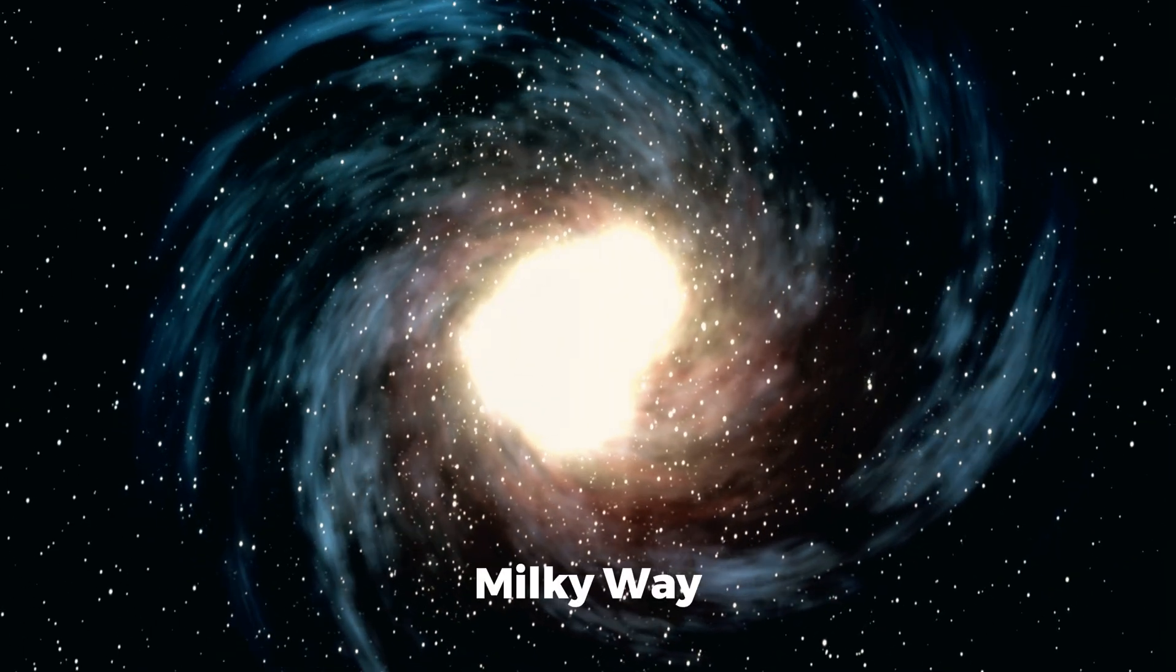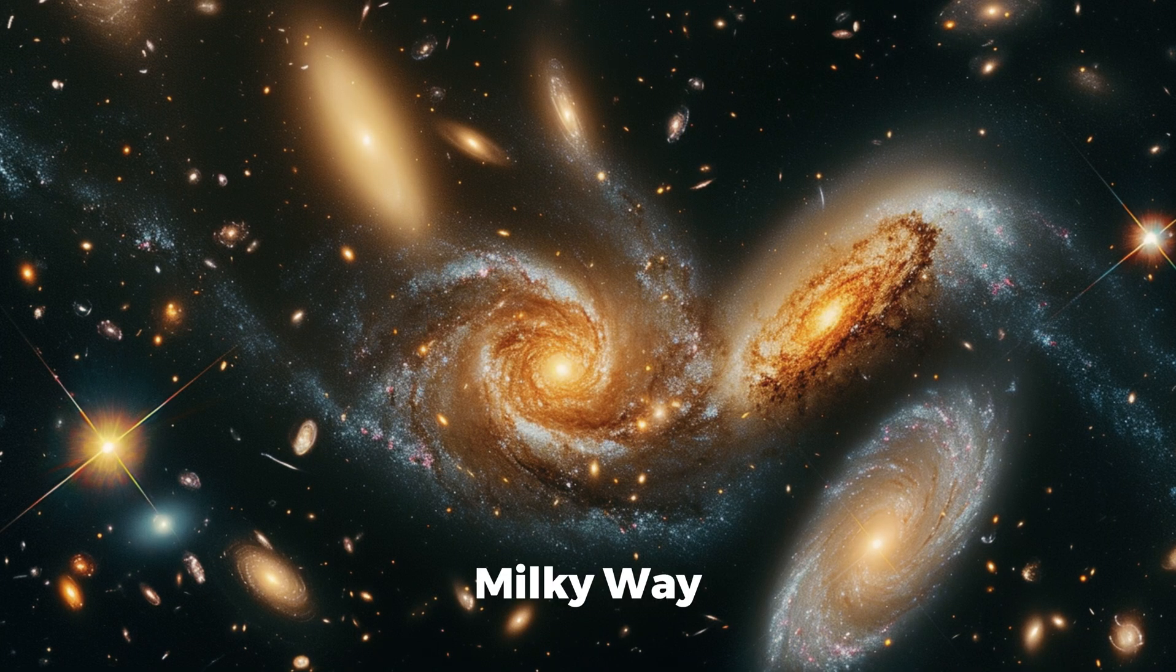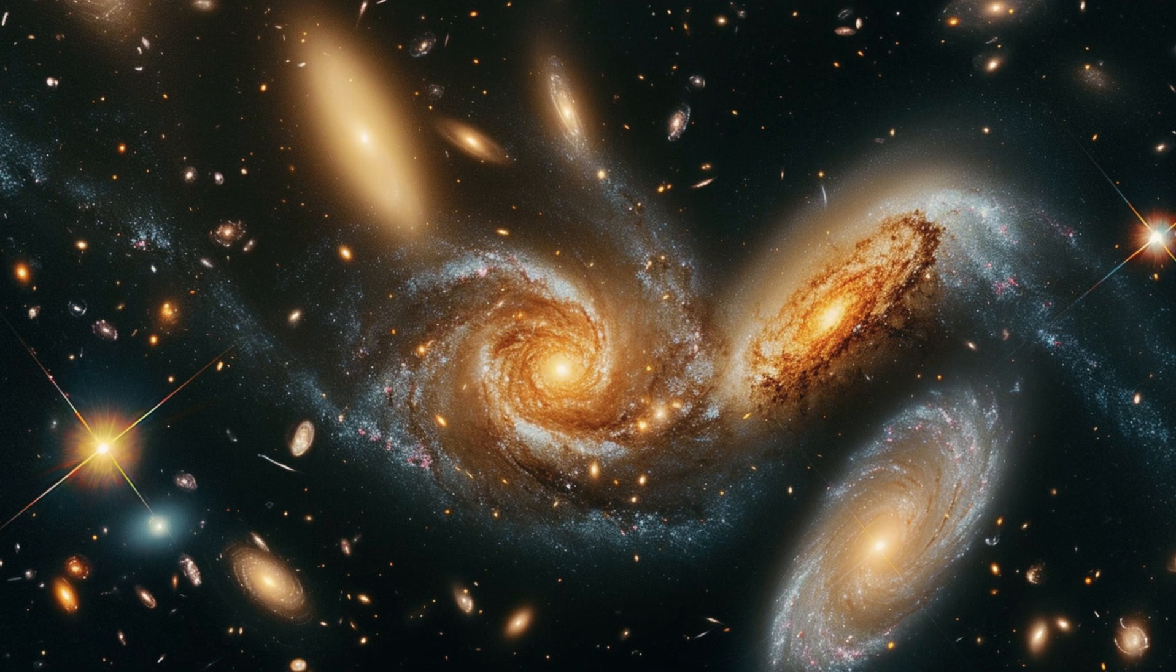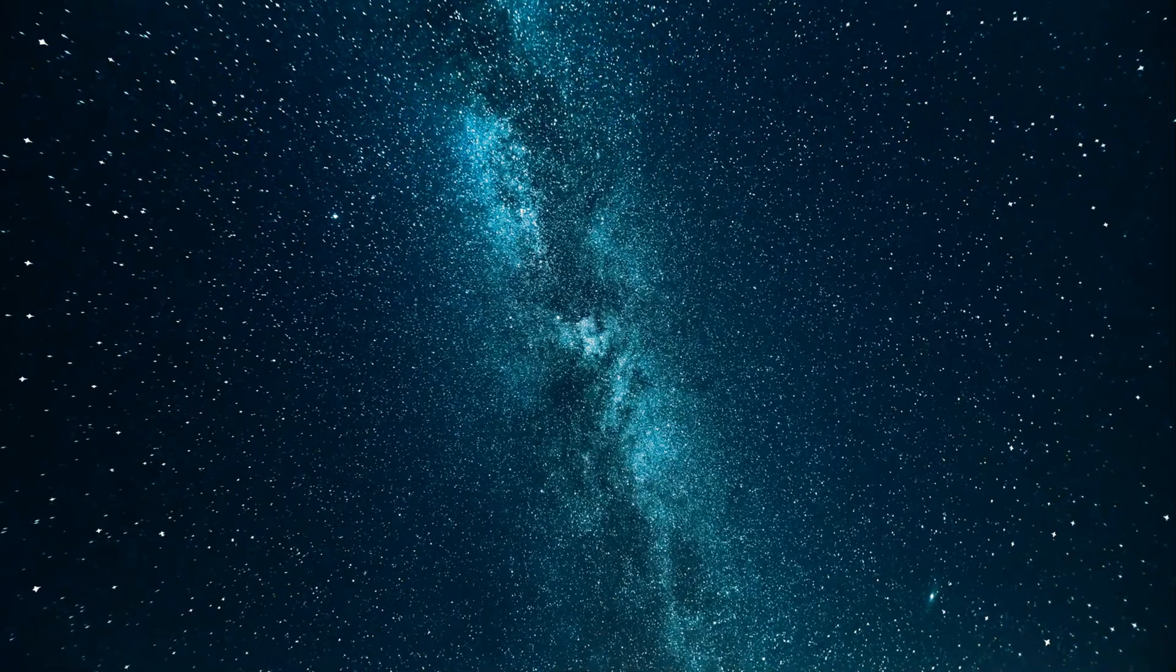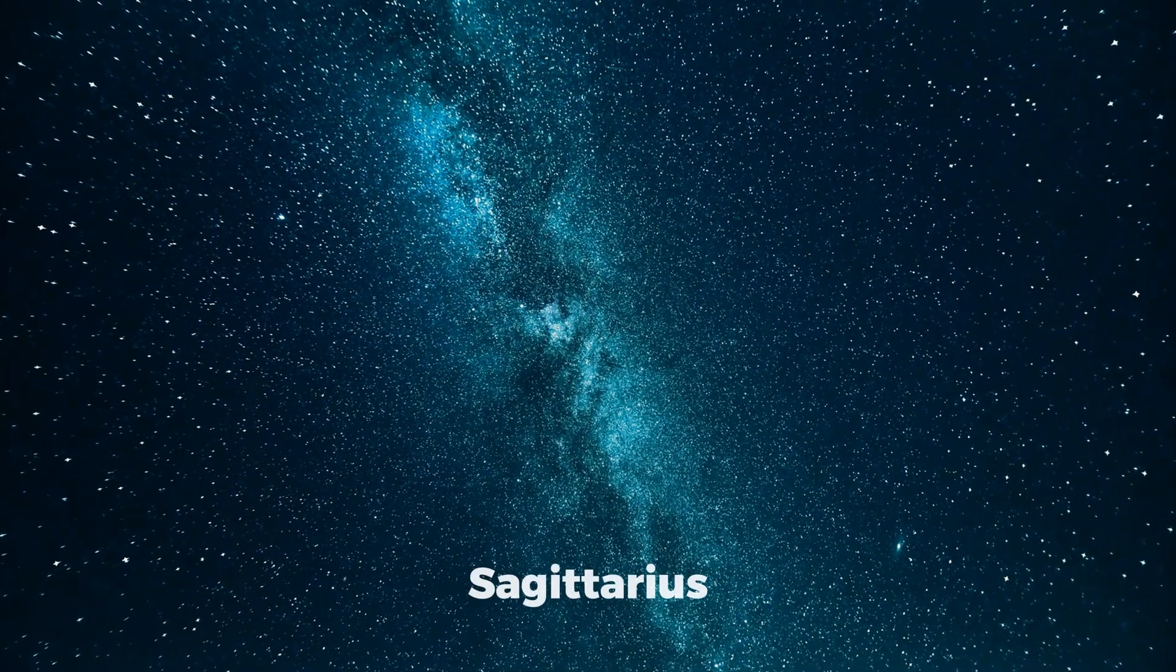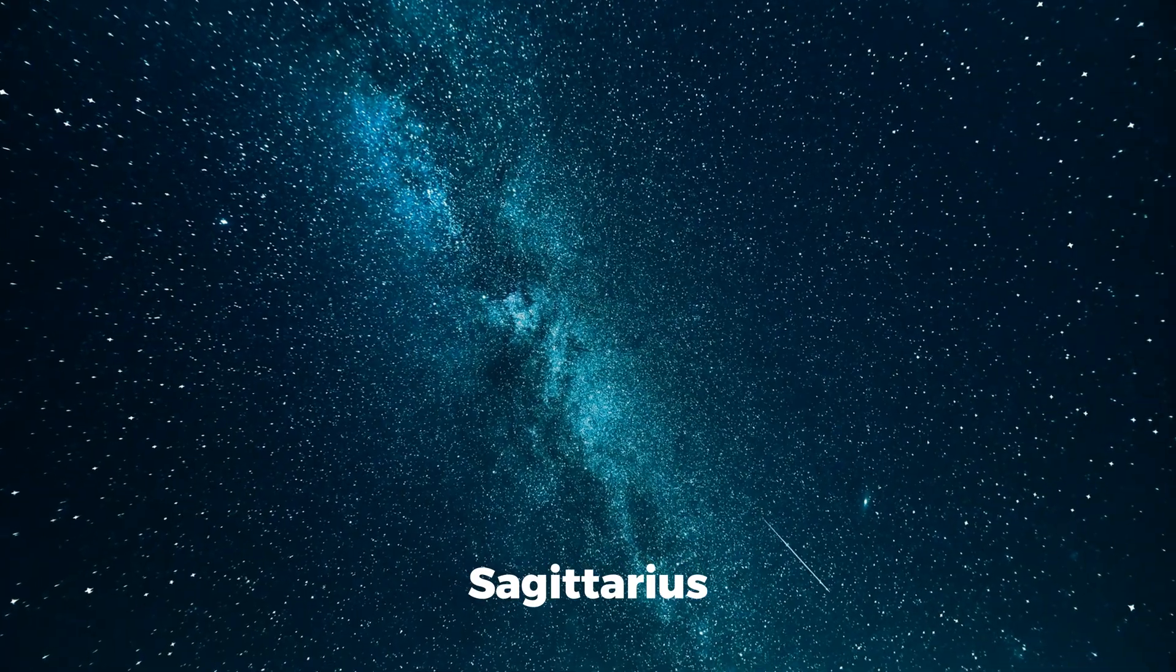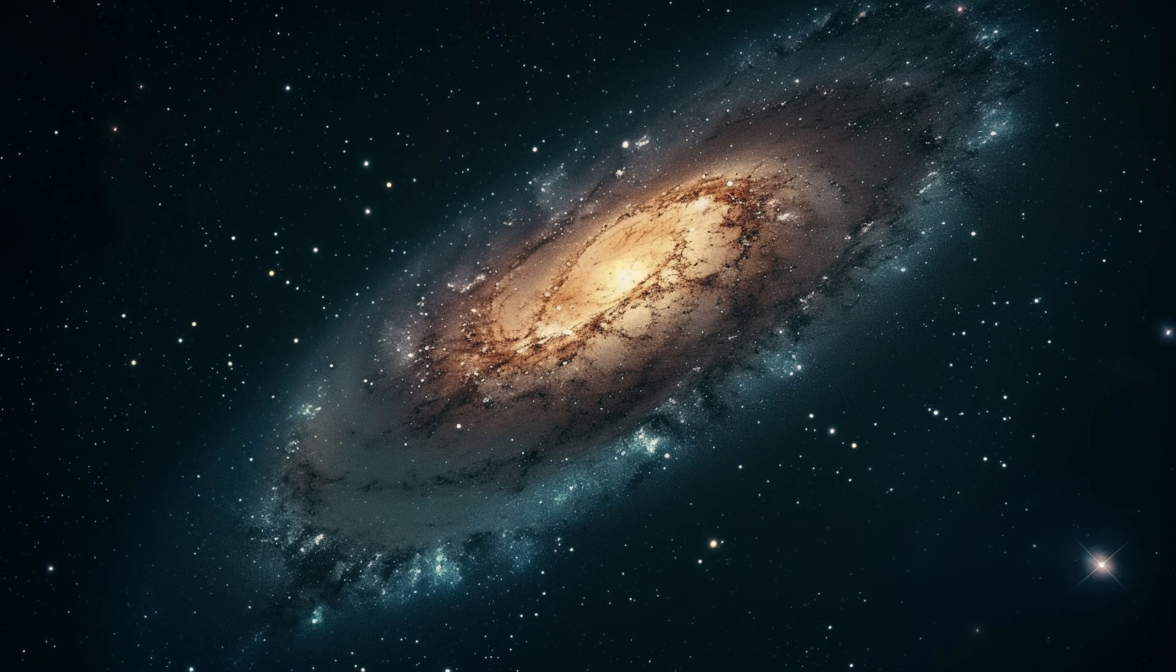Our galaxy, the Milky Way, belongs to the local group of galaxies and is a barred spiral galaxy. To find this galaxy, you would need to look up at the night sky in the direction of the star constellation Sagittarius. Its galactic center is very faintly visible there.